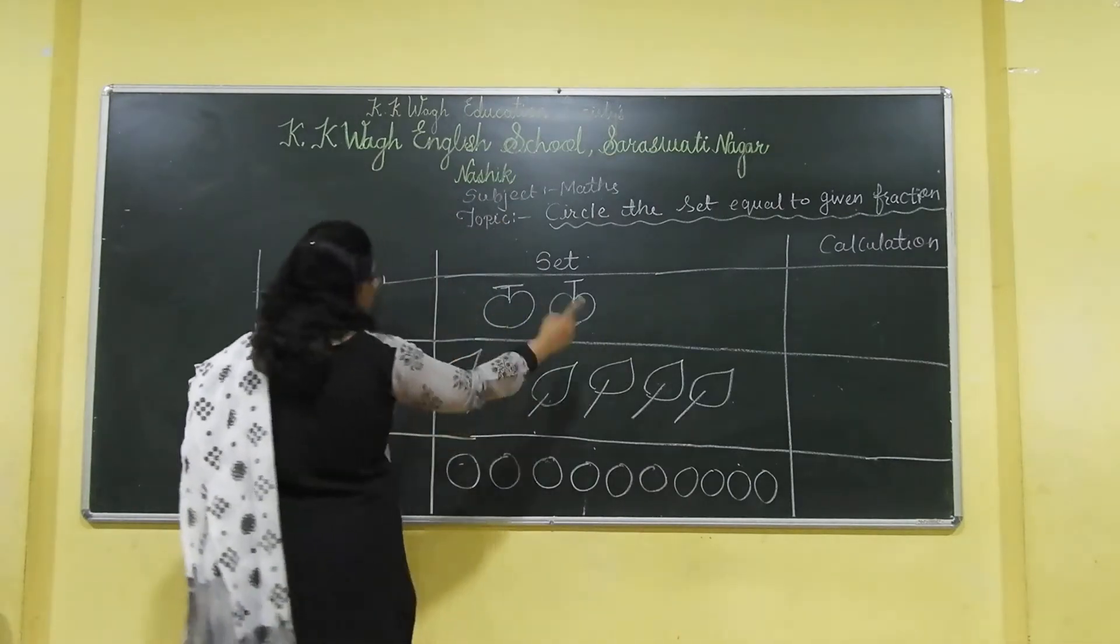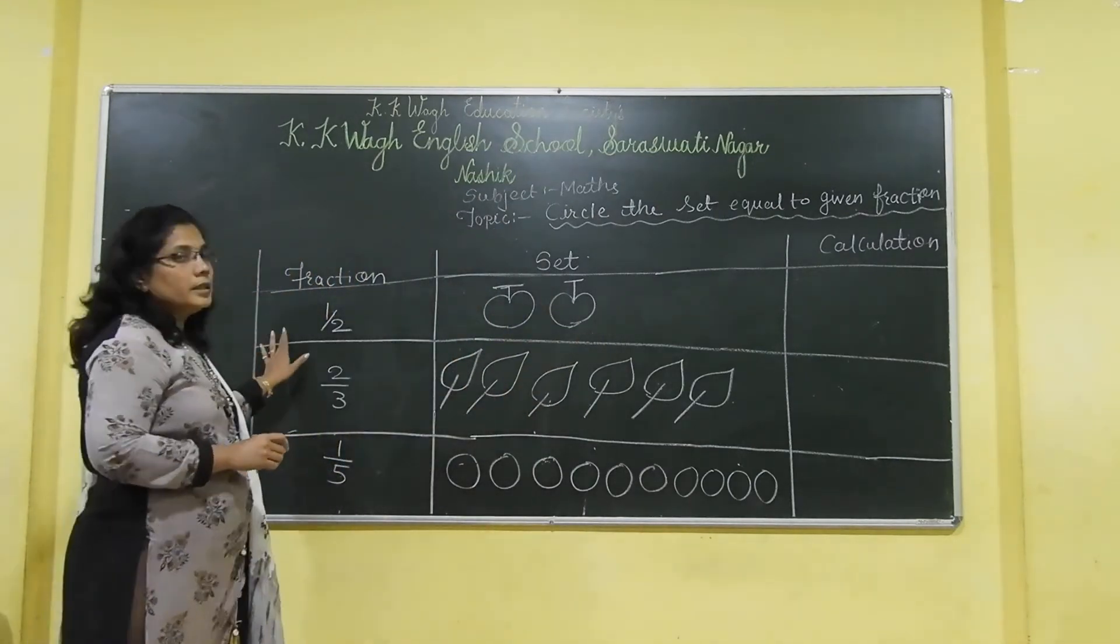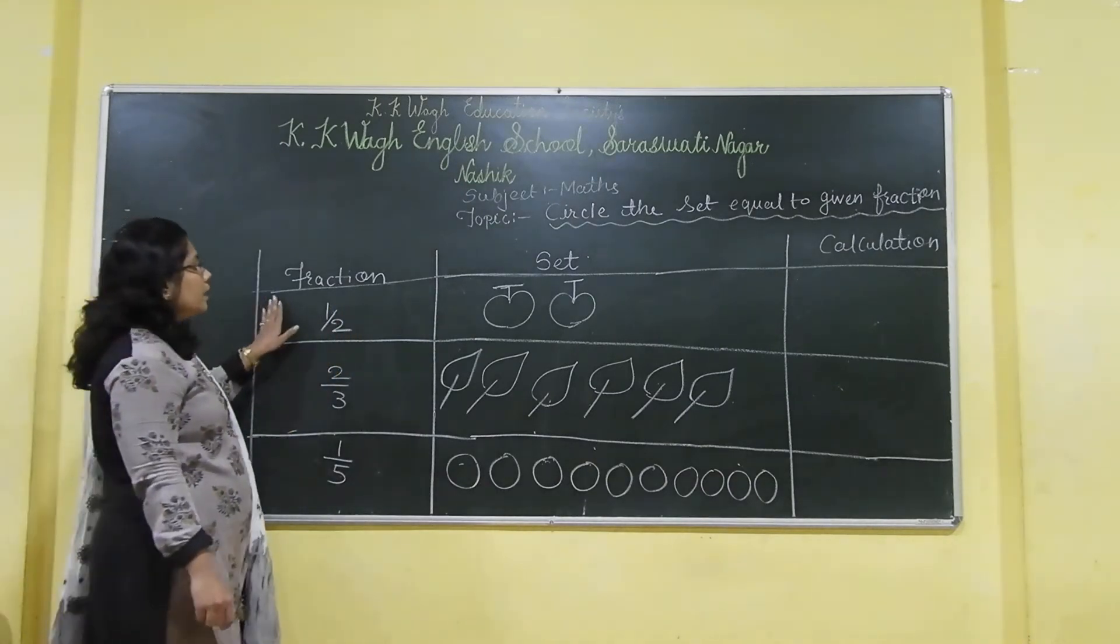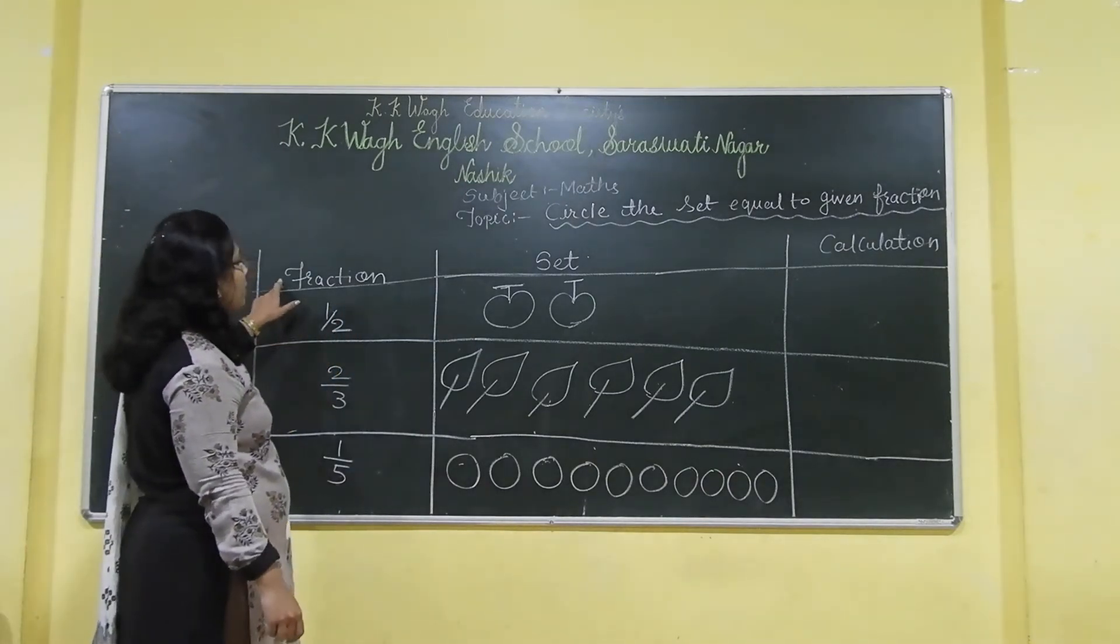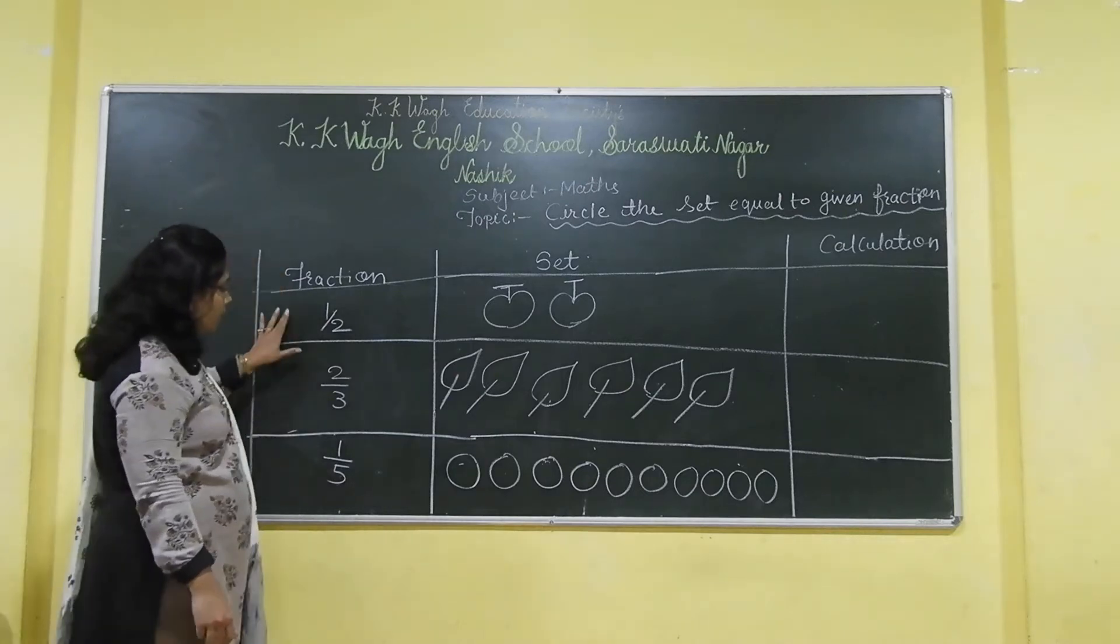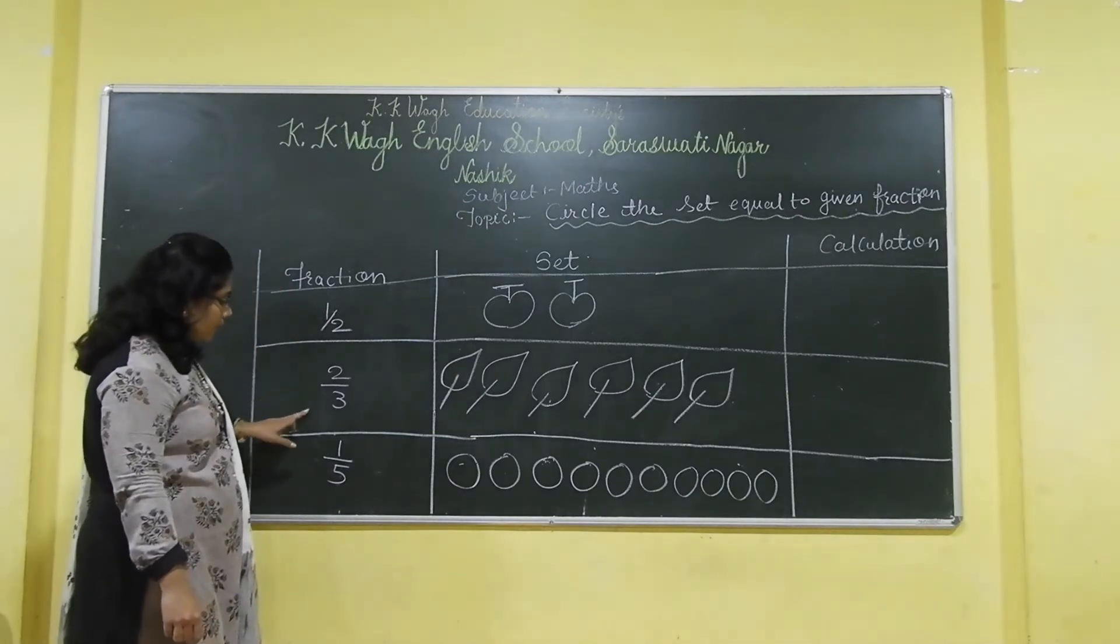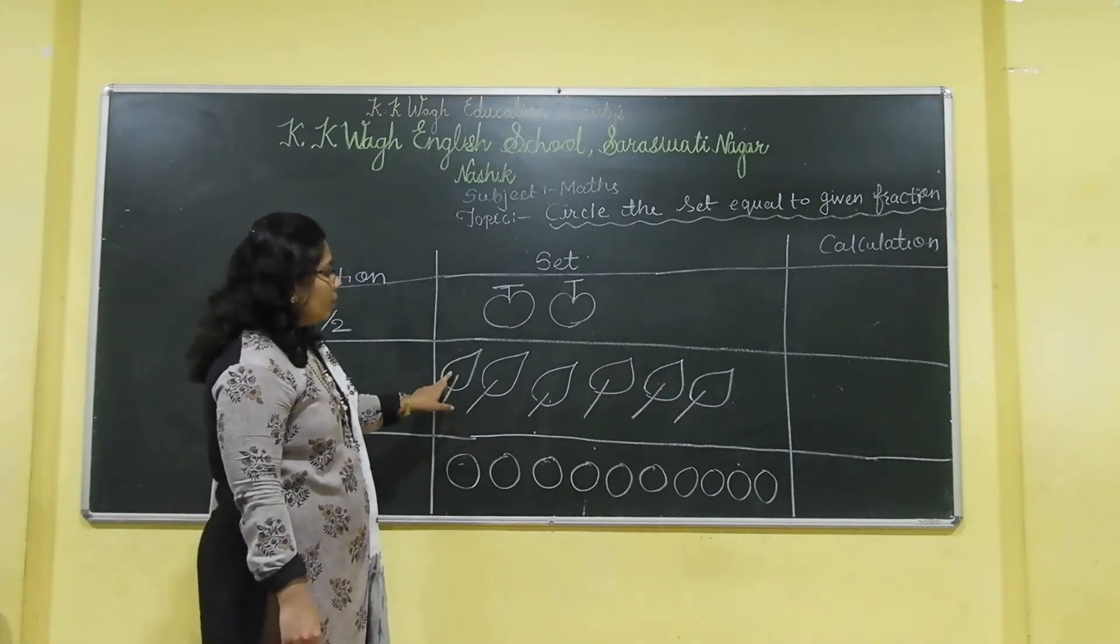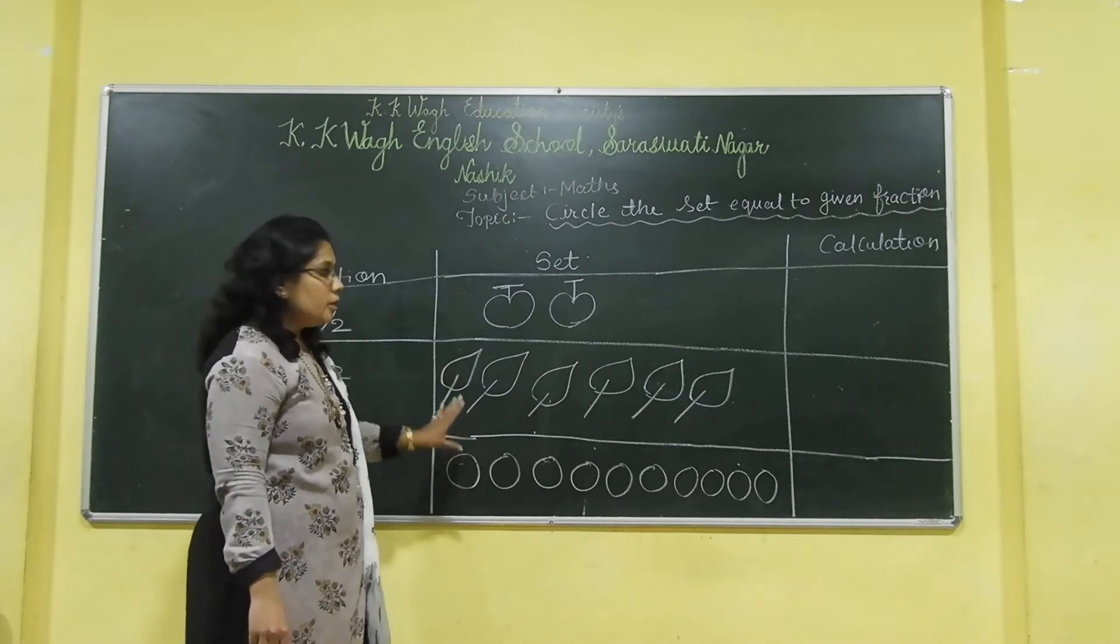See here, you can see this table. In this table, this is the exercise in your book, page number 58. You can see there the fraction 1 by 2, 2 by 3 and 1 by 5. In this set,